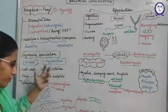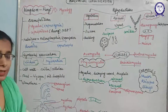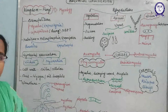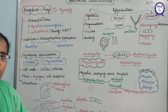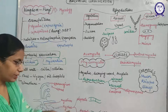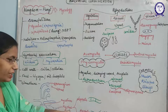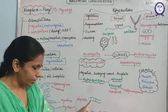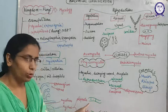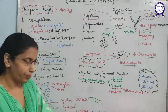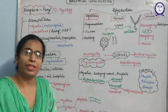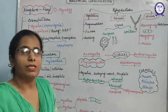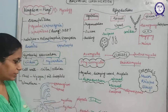Regarding the structure: when spores get favorable conditions, they disperse by air or water. Getting favorable conditions, they develop thin thread-like structures known as hyphae. These hyphae may be septate or aseptate — if the hyphae have septa in between, it is septate. If septa are absent, it is aseptate, also known as coenocytic condition — a multinucleate condition where septa are absent.